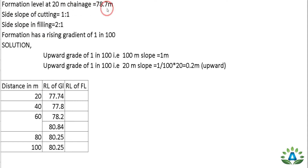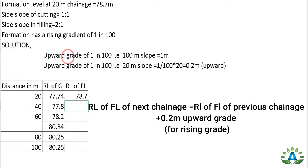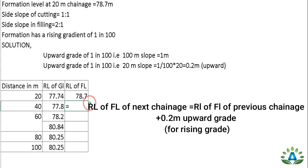At the 20-meter chainage, the formation level is 78.7 meters. We have already calculated an upward grade of 0.2 meters per interval. To find the formation level at the next chainage, we add 0.2 to the previous value. At 40-meter chainage: 78.7 + 0.2 = 78.9 meters.